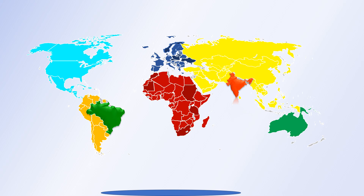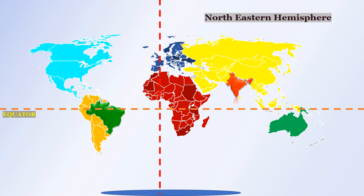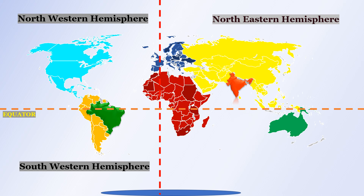We will study the seven continents of the world and the location of Brazil and India. India is located in the north-eastern hemisphere of the Earth, whereas Brazil is located in the western hemisphere. Some part of Brazil is located in the north-western hemisphere and the major part of Brazil is in the south-western hemisphere of the Earth.